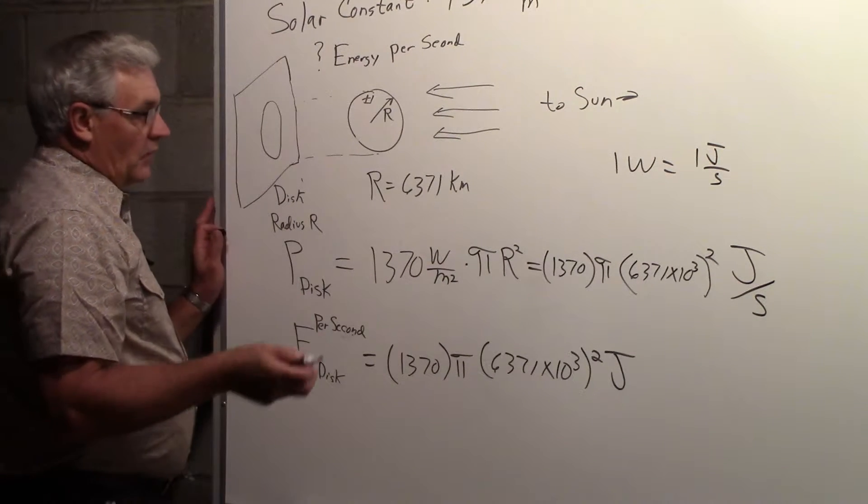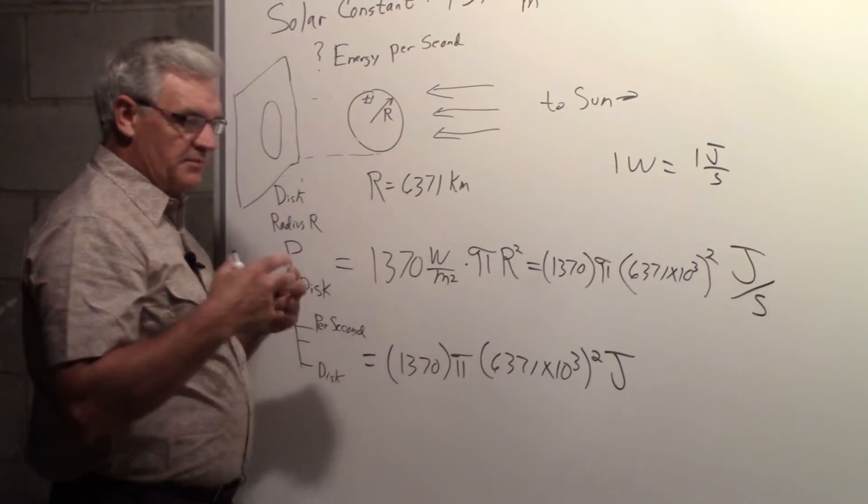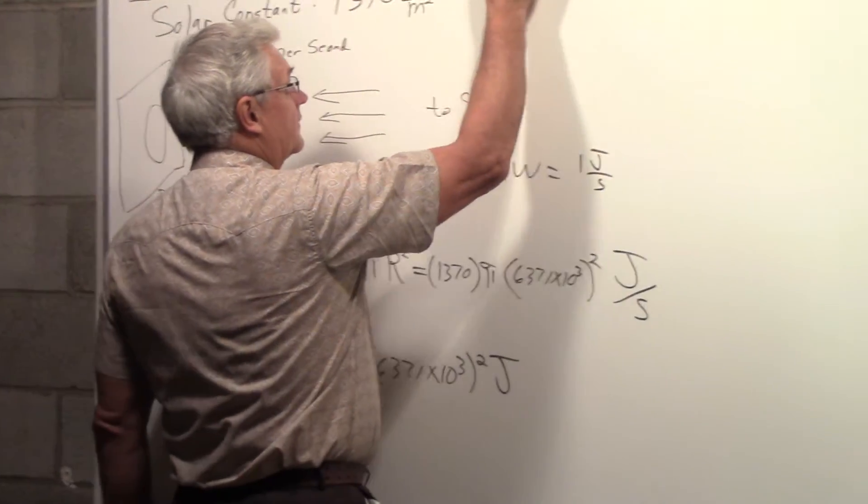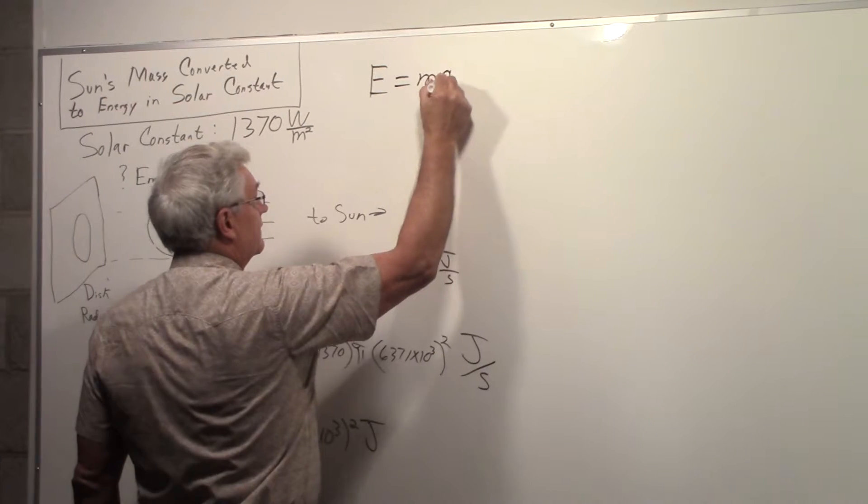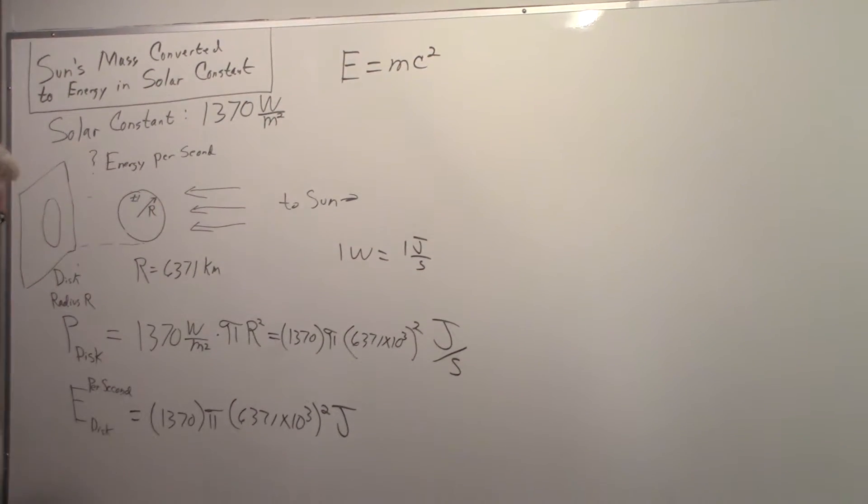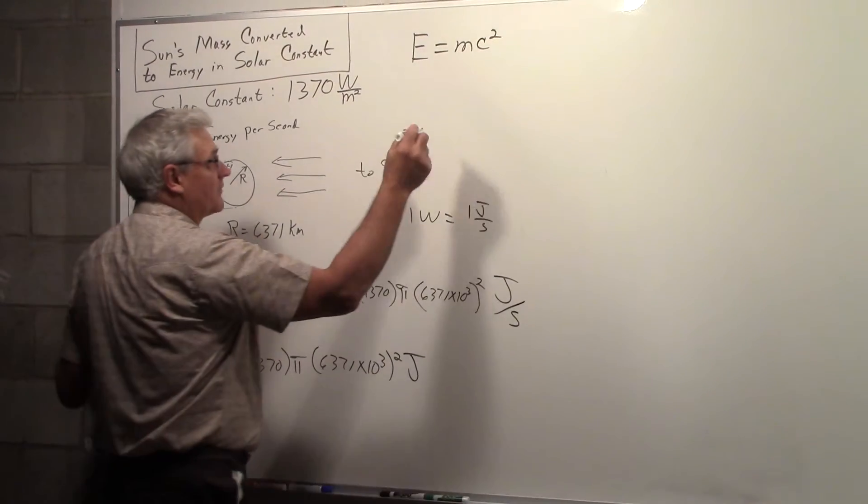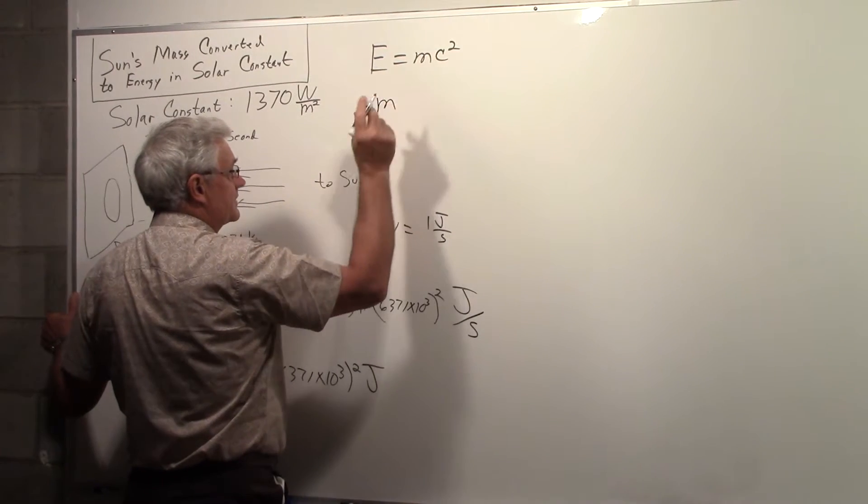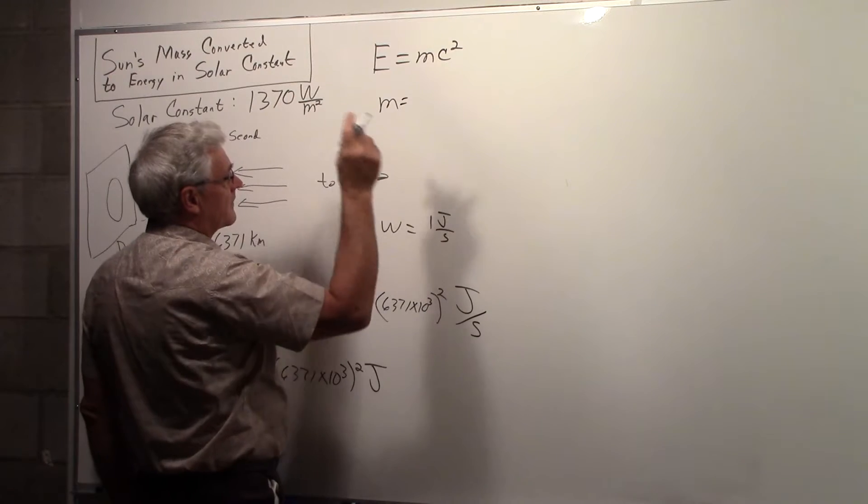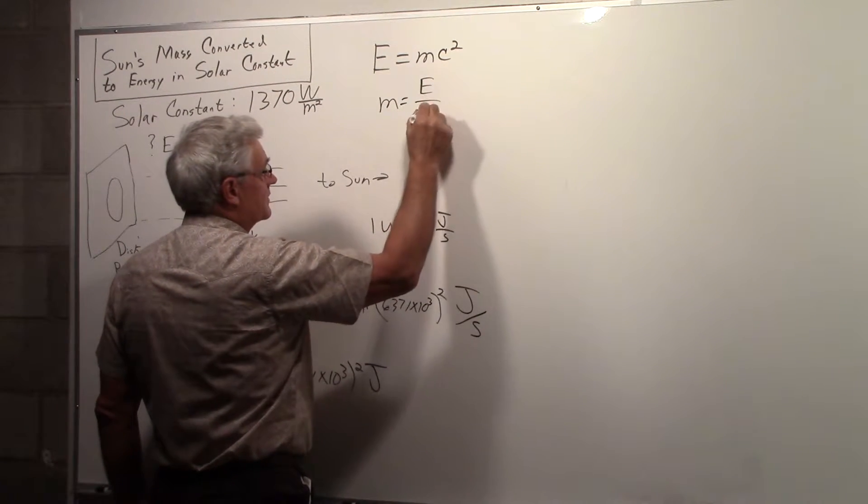So to figure out what the mass of the sun that's being burned, that's being converted to energy, we go to the famous equation E equals MC squared. This is what we're going to use for the energy. So if we solve this for the mass of the sun that's being converted to provide that amount of energy at the Earth, the mass would be E over C squared.